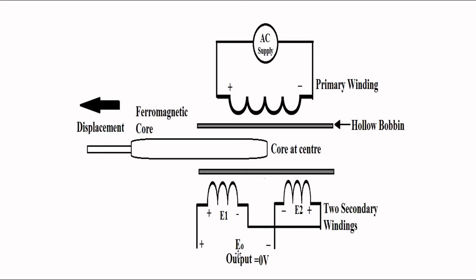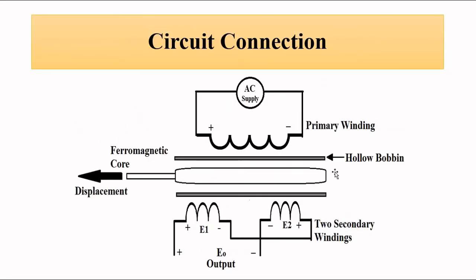The differential output is zero. But when the core moves to one of the extreme ends, whether to the left or right, the degree of coupling of the primary winding increases with one of the secondary windings, either with this winding or this winding.